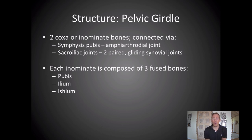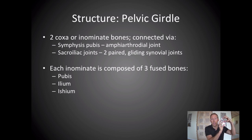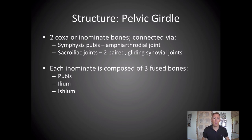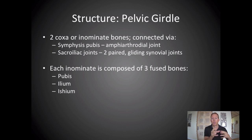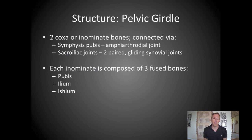The innominate bone itself has three fused bones — similar to how skull bones fuse together. So if you have two innominate bones coming together to form your pelvis, each innominate has three portions: the pubis, the ilium, and the ischium. Knowing these can be helpful, especially when studying origin and insertion points for different muscles or where certain hip ligaments attach.